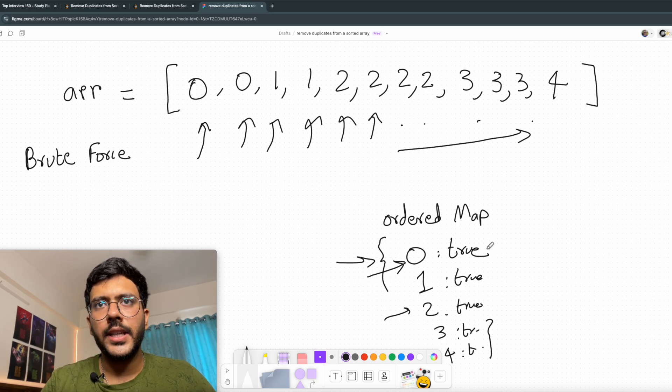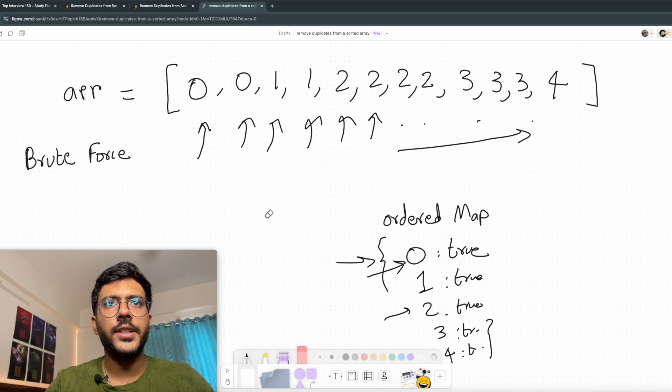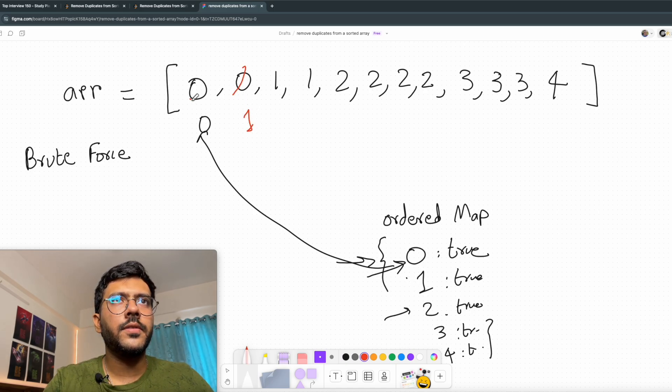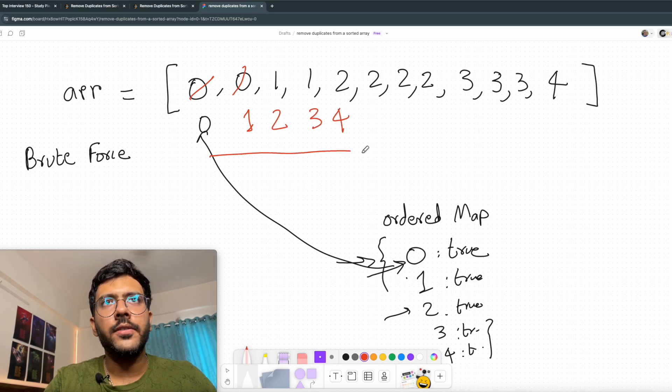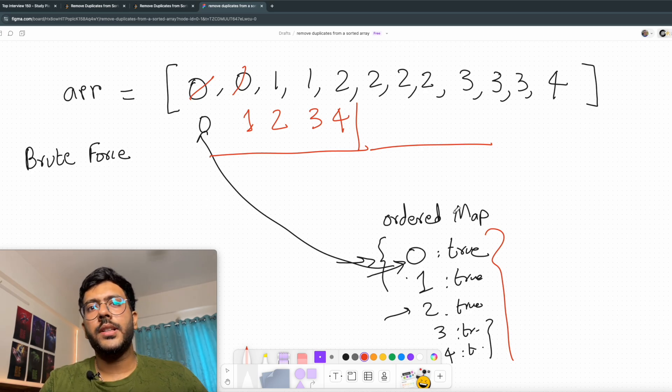And my final map will contain these values. Now once I have traversed the array, I will traverse my map. Since my map is an ordered map, it will store all the numbers in ascending order. So first element will be 0. I see 0 and I put it at the first location of my array. Then I have got 1, so I put 1 here. Then I see 2, 3, and 4. And I fill values till this element. And I don't care about the remaining elements. My function will return the size of the ordered map, which is the number of unique elements in the array. And I have also modified my input array such that the first elements are unique. So this is my brute force solution.